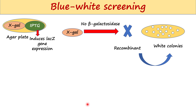But recombinant bacteria will not be able to produce beta-galactosidase. Hence, X-gal would not be hydrolyzed and the indigo color will not be produced. Therefore, recombinant bacteria will appear white.